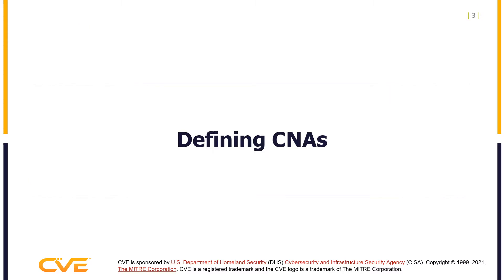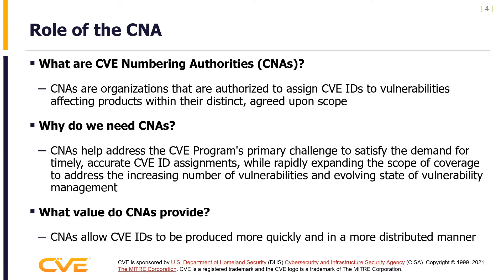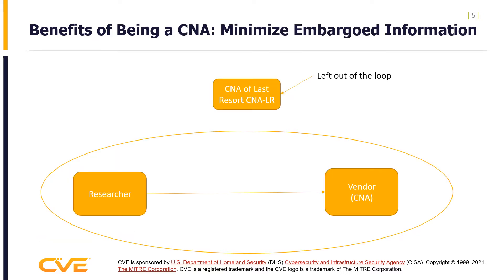What defines a CNA? CVE Numbering Authorities are authorized to assign CVE IDs to vulnerabilities affecting products within their agreed-upon scope. CNAs help to address the CVE program's primary challenge: to satisfy the demand for timely and accurate CVE IDs, while rapidly expanding the scope of coverage to address the increasing number of vulnerabilities and the evolving state of vulnerability management. One major benefit of becoming a CNA is that you can minimize the number of people with access to embargoed information.